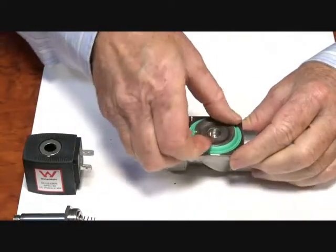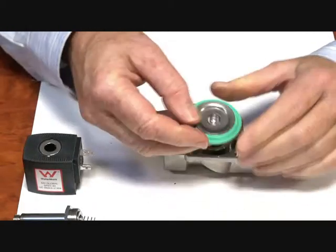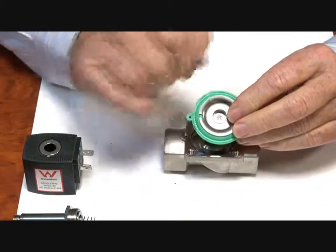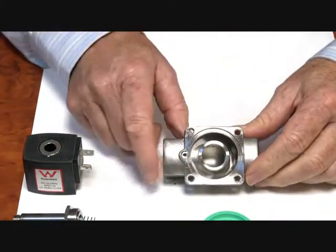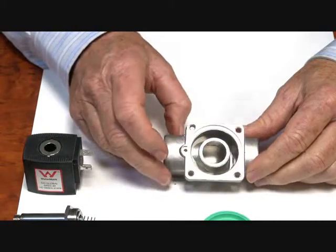Spring comes off. Diaphragm comes out. There's a little bleed hole there which must be kept clean. Diaphragm assembly and the jet seating assembly inside here.